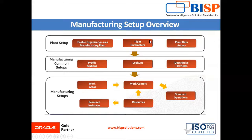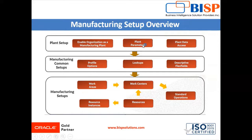In the plant parameters, first we have to define the manufacturing calendar. The manufacturing calendar specifies the working time in the plant and is used to determine the availability of the scheduling work center in a work order. We have also defined the work definition and work execution in the plant parameters setup.